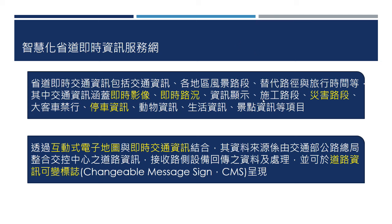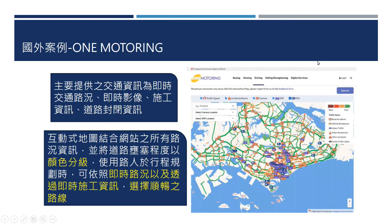接下来看国外的案例，新加坡的One Motoring。新加坡地不大，所以可以把每一条重要的道路都显现出来，从速度慢到快依序排列，就可以了解整个路网上面的最新资讯。它主要提供即时的交通路况、即时影像、施工资讯，还有道路封闭的资讯等等，让用路人可以去选择适宜的道路。